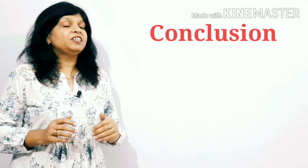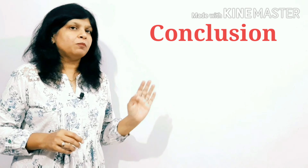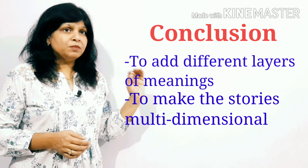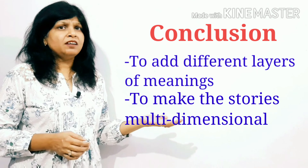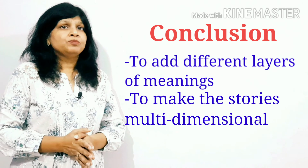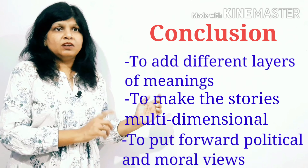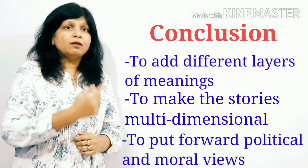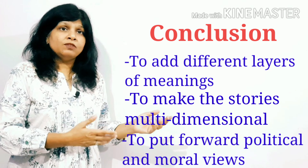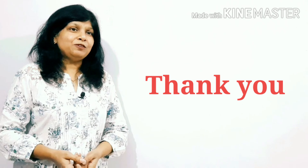Writers use allegories to add different layers of meaning to their works. Allegory makes their stories and characters multidimensional, so that they stand for something larger in meaning than what they literally stand for. Allegory allows writers to put forward their moral and political points of view. If we closely look into the minds of the writer, we can come to know how he views the world and how he wishes the world to be. I hope allegory is now clear to you. Thank you very much.